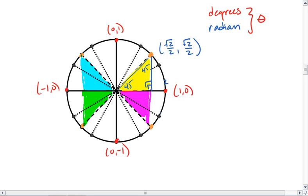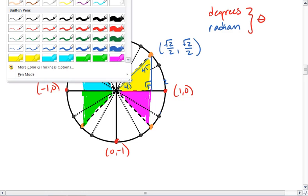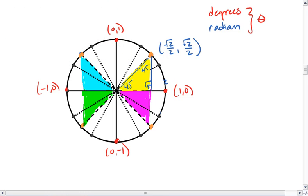For example, over here, we're now to the left, meaning cosine is negative. We get negative root 2 over 2, but a positive root 2 over 2 for sine, because we're still above our horizontal diameter.